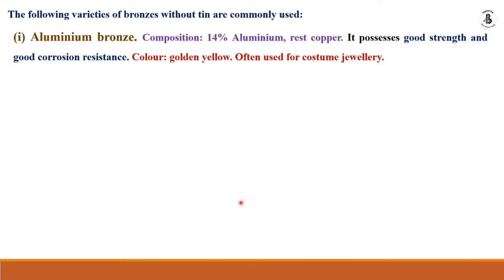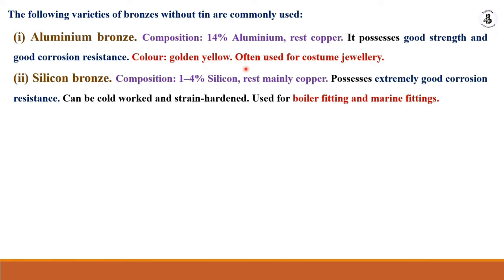Various branches of tin bronze are commonly used. Aluminium bronze — in that case the colour is green to yellow — and it is often used for costume jewellery.